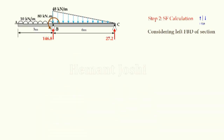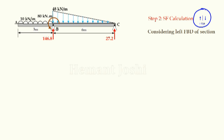Step 2 is shear force calculations. We have 3 points: A, B, and C. At each point, we calculate two values — just left and just right — giving a total of 6 shear force values. Using the same sign convention: sections left upward is positive, and we always consider the left FBD for shear force calculation.